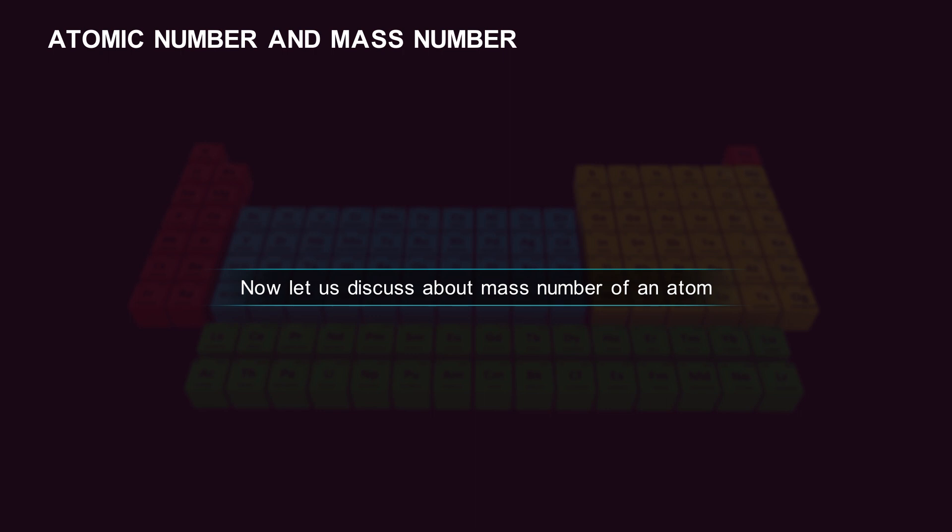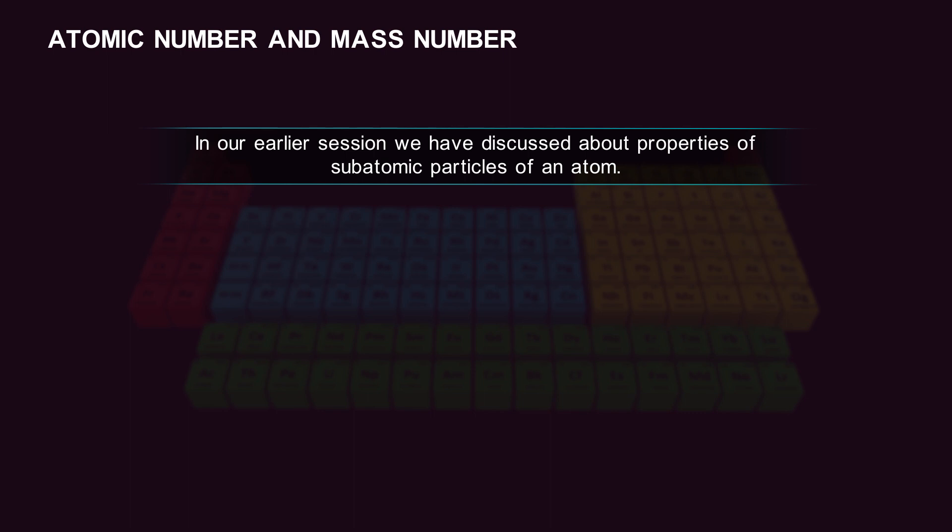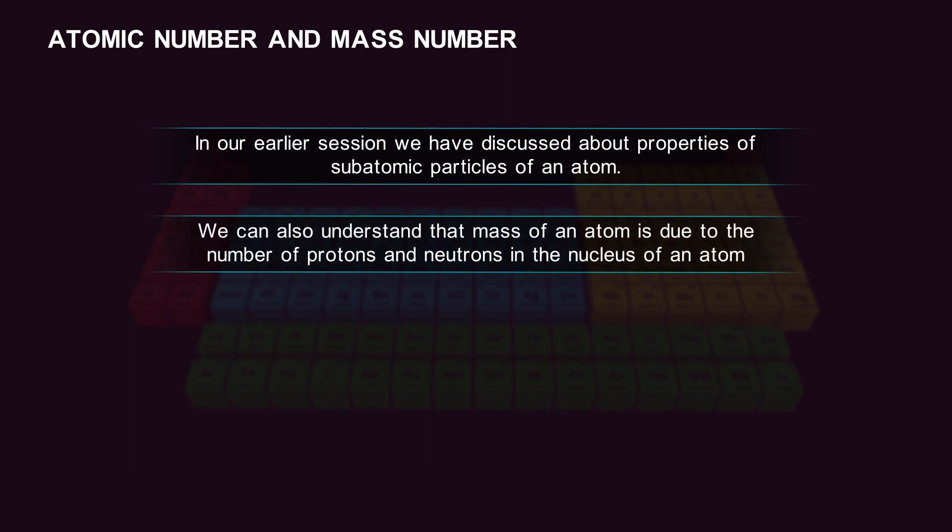Now let us discuss the mass number of an atom. In our earlier session, we discussed the properties of subatomic particles. We can understand that the mass of an atom is due to the number of protons and neutrons in the nucleus.